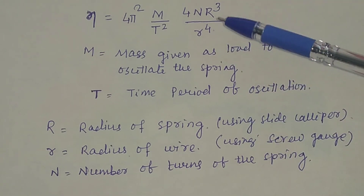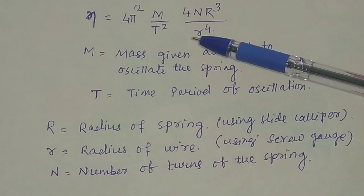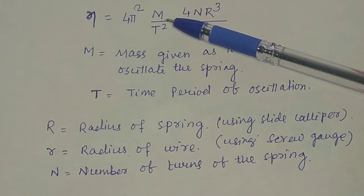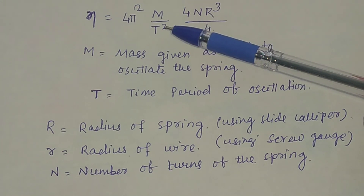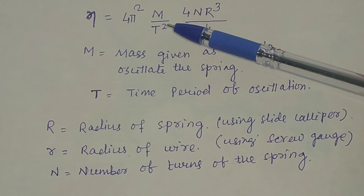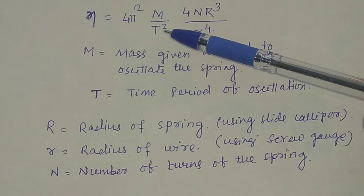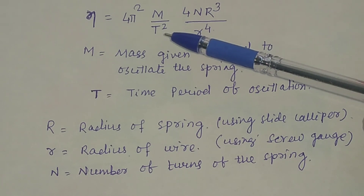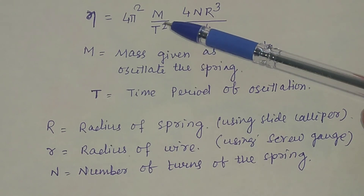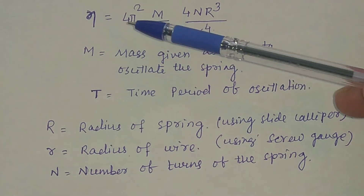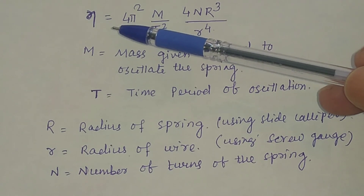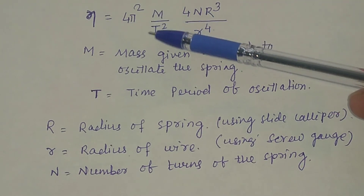All these values you can determine. In the experiment, you have to find out the time period of oscillation and you have to do a graph. For different masses, you will find different time periods. From the slope of the m-T squared graph, you can find out the value of eta. For the determination of the rigidity modulus, you need this slope.